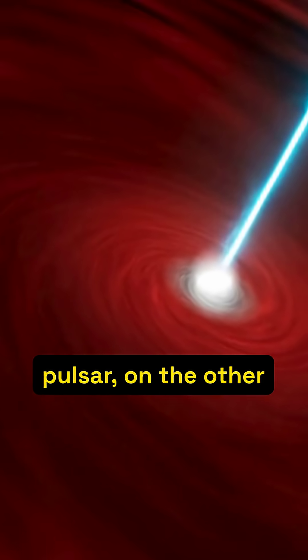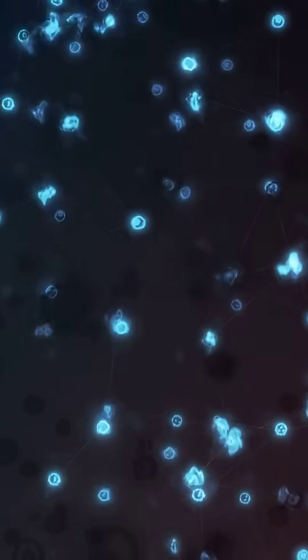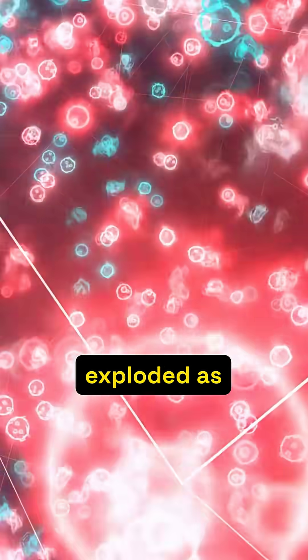A pulsar, on the other hand, is a highly magnetized, rapidly rotating neutron star. These are the collapsed cores of massive stars that have exploded as supernovae.